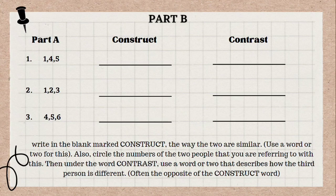Then the remaining one number will be our contrast — the photo that is different or does not share the same quality as the other two. After that, we need to describe in what way it is different compared to the two photos we first chose.